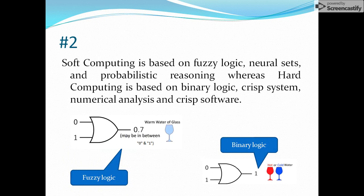The second difference is it is based on fuzzy logic, neural sets and probabilistic reasoning, whereas hard computing is based on binary logic. Let's take a normal example of fuzzy logic here. As in this diagram, we have two inputs: 0 and 1, so you can get one output something like 0.7. 0.7 is in between 0 and 1.